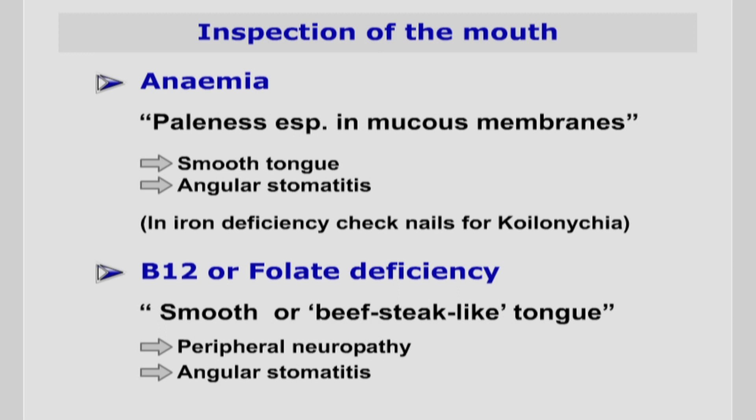Check for evidence of anaemia, B12, or folate deficiency — there may be signs when you observe the patient's face, mucous membranes, and nails. If you suspect B12 deficiency, also assess their neurological integrity. Clinical features of anaemia include: pallor, especially of the mucous membranes; koilonychia; smooth tongue; and angular stomatitis. In B12 or folate deficiency, the tongue will be smooth or beefy red, and peripheral neuropathy may be present.